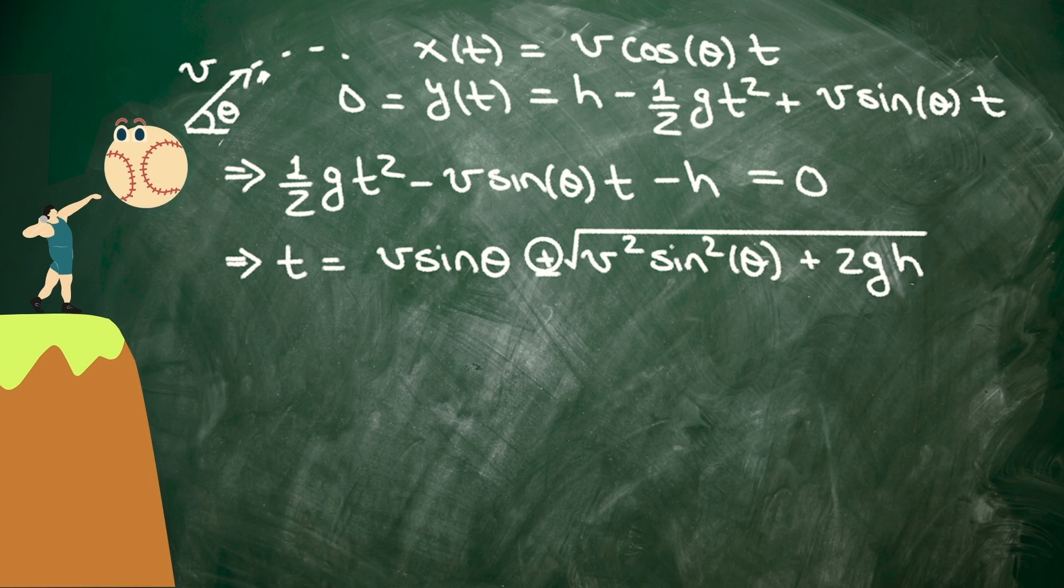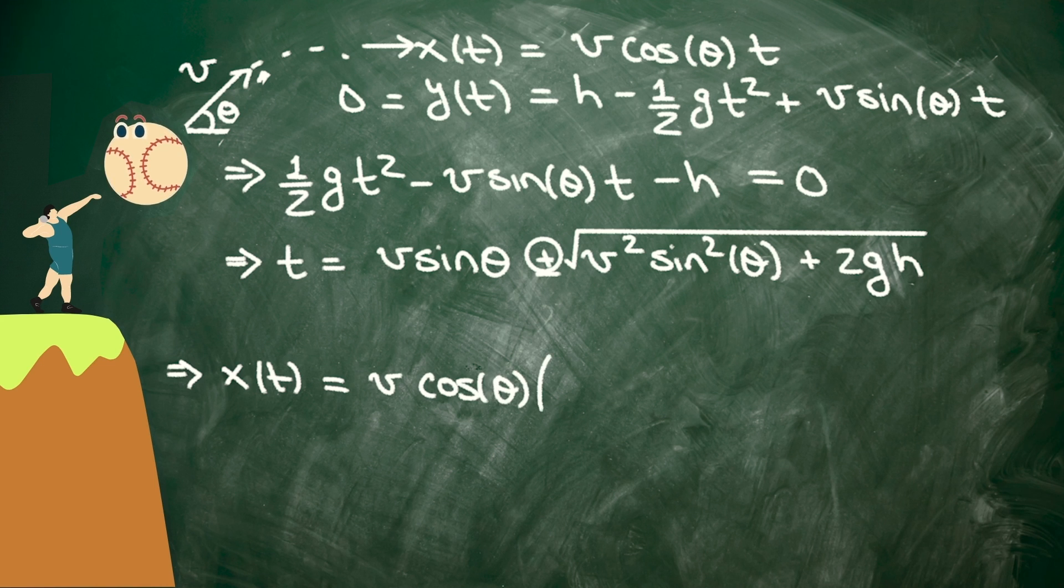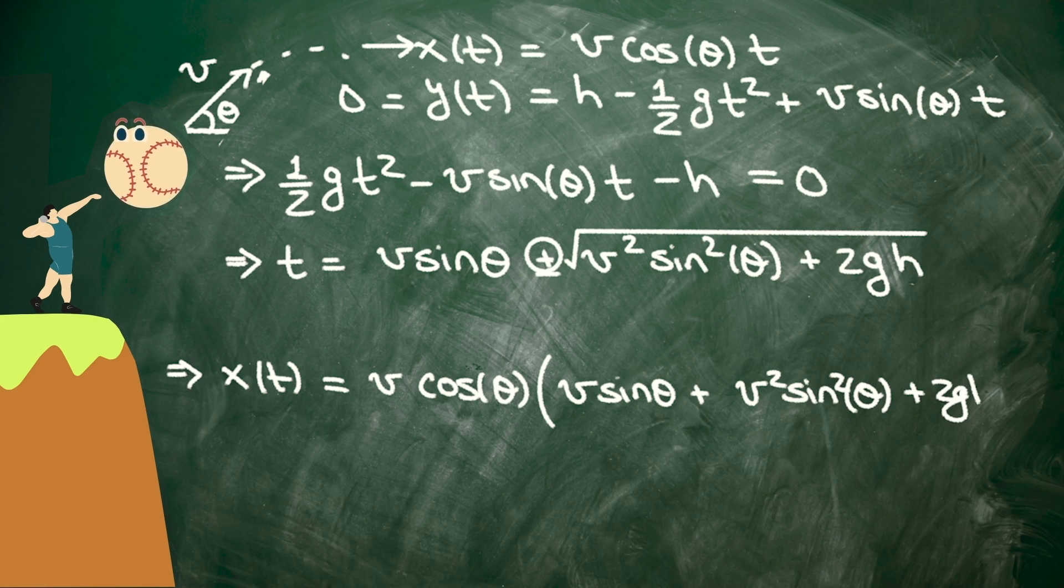Now, we want to pick the plus sign here, because we want the time to be positive, not negative. So that's the time when the ball is going to hit the ground. Let's plug it in to our x equation to figure out how far from the bottom of the cliff the ball will be. We've got v cosine theta times that time, v sine theta, plus v squared sine squared theta, plus 2gh square root. So that's our answer.